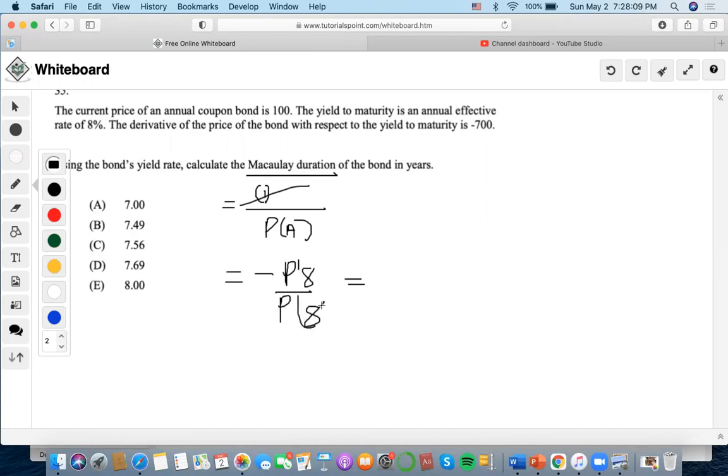Again, the Macaulay duration, another way of saying what the Macaulay duration equals, is the negative derivative of the price divided by the price of the bond. They give us the price of the bond, so we input 100 here. Don't forget the negative.